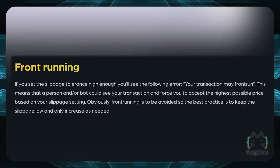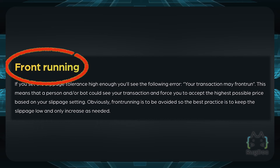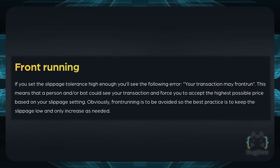Now there is something called front running. If you set your slippage tolerance high enough, you'll see an error that says your transaction may be front run. This means that a person or a bot could see your transaction and force you to accept the highest possible price based on your slippage setting. Obviously, front running is to be avoided, so the best practice is to keep the slippage low and only increase it if you really need to.